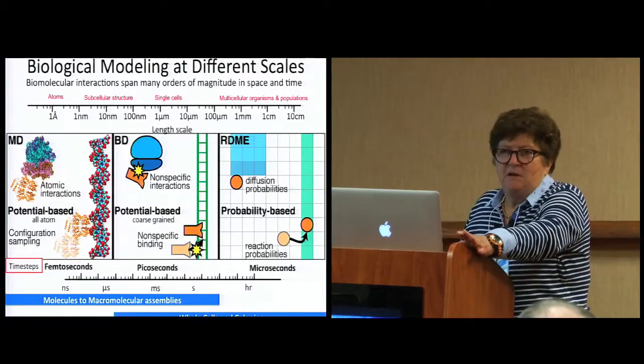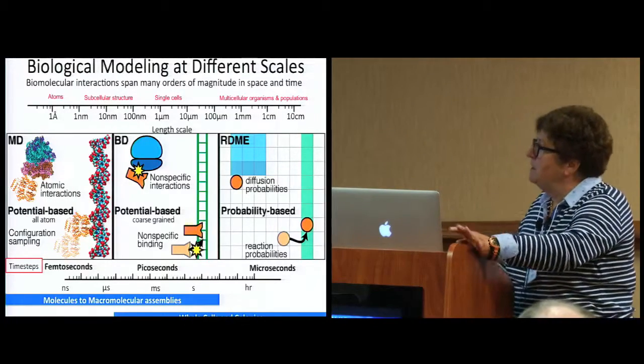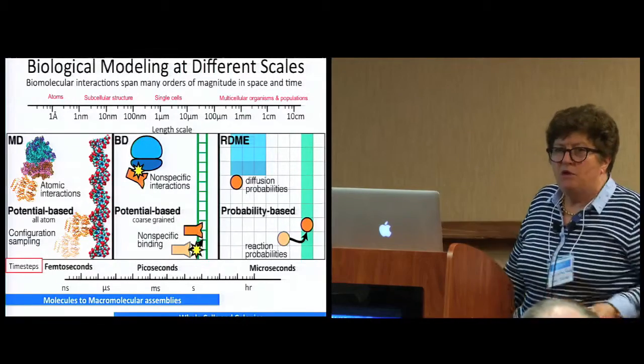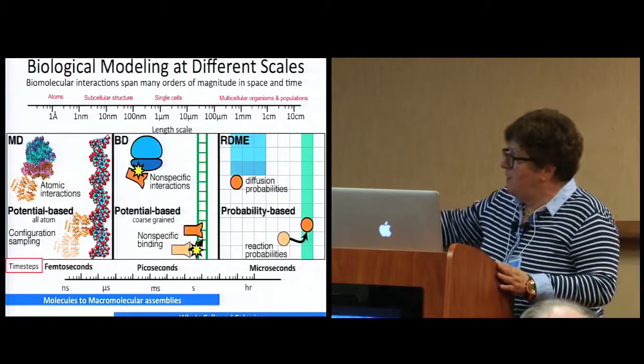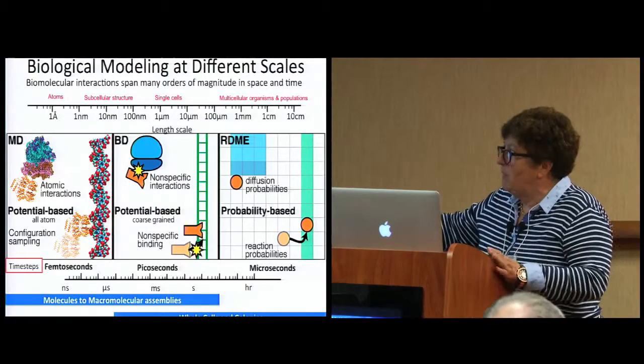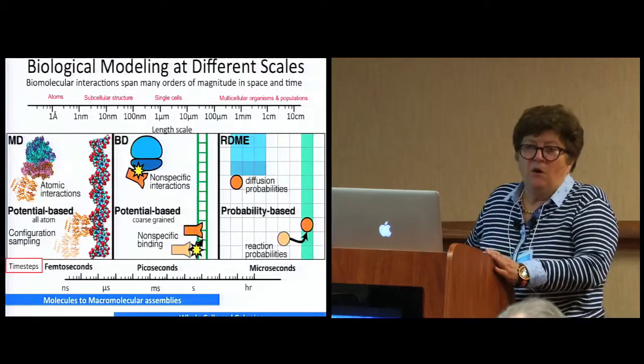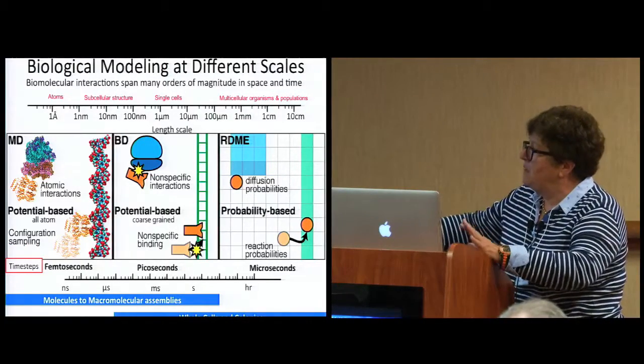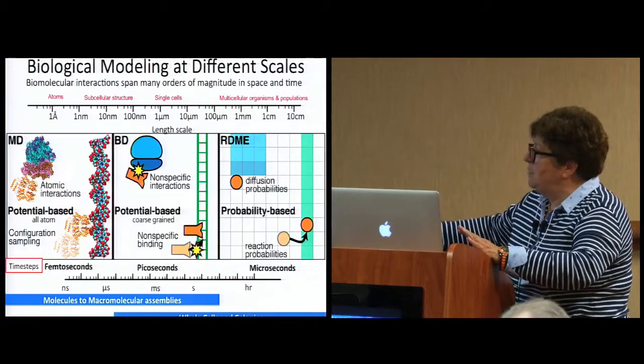They have time steps of femtoseconds. Go over to Brownian Dynamics, maybe you speed it up with picoseconds. But you're staying in sort of this subcellular regime. If you want to simulate host cells and get up to colonies of cells, then you've got to work in that regime from the micron up to the millimeter range. And I'll show you two examples that we've done in losing sort of atomic detail and speeding things up.